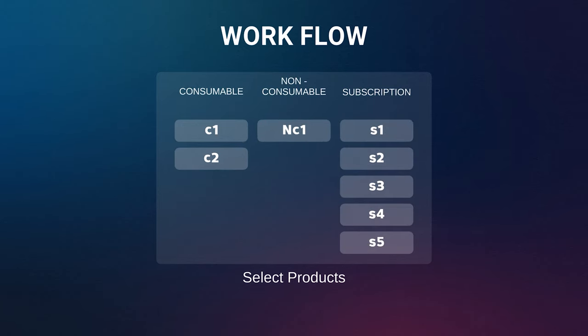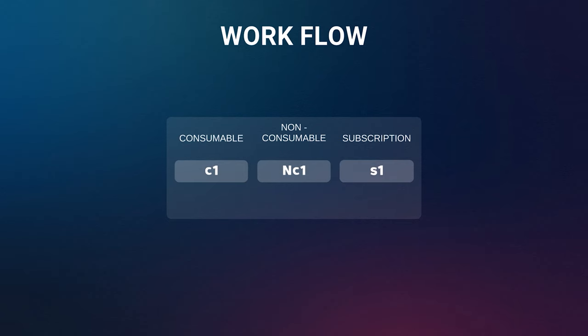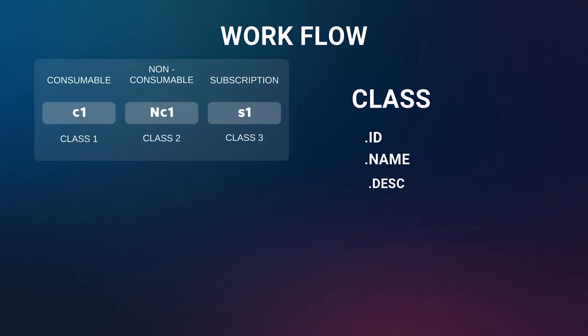For this example, let's take one item in each category: one for consumable, one for non-consumable, and one for subscription. Once we've decided what to sell, we need three classes. These classes are used to store all the data of the in-app products — for example, their ID, name, description, price, time period, and so on.